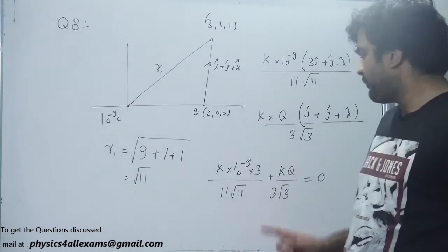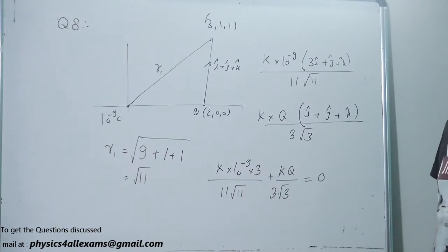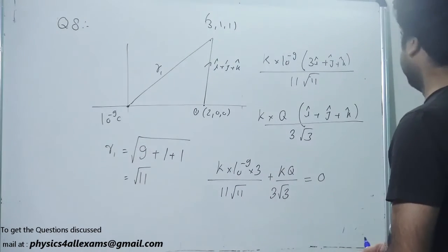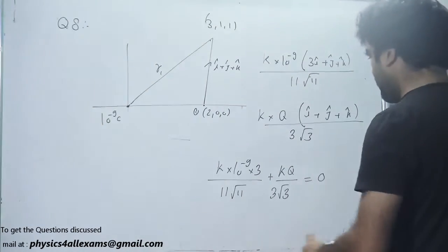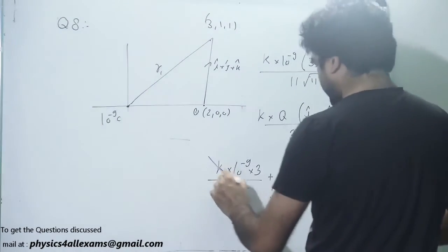Solving this we will get the value of capital Q. Solve this further, K will get cancelled.